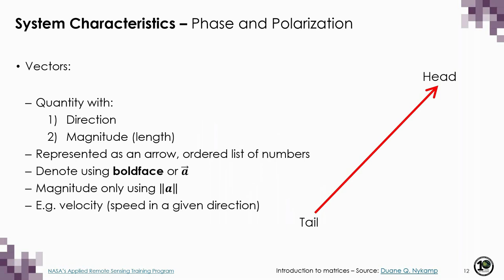Now that we know a bit more about polarization, we can talk about phase and polarization together, which is really important for understanding radar polarimetry. Before we discuss phase, it's important to describe what a vector is, since we use this concept extensively in radar polarimetry. A vector is a quantity with both direction and magnitude, typically represented as an arrow with the head at some point and the tail at the origin, or using an ordered list of numbers. An example of a vector you may be familiar with is velocity, which is speed in a given direction.